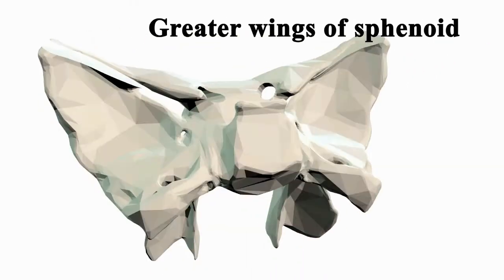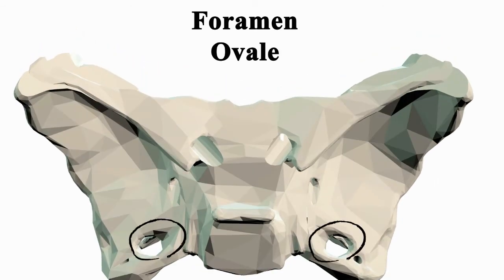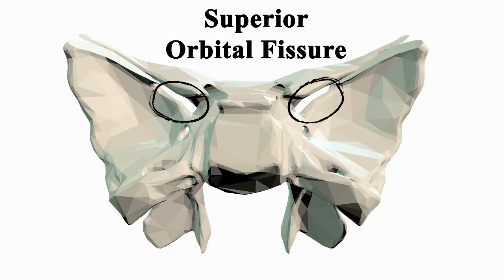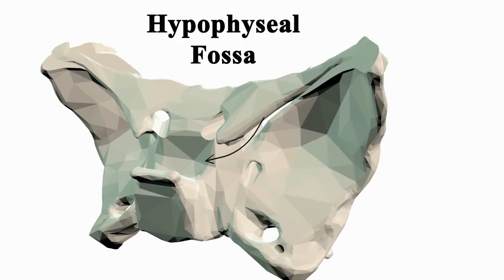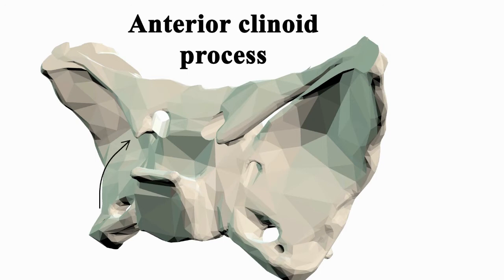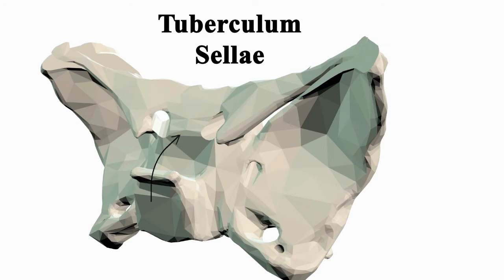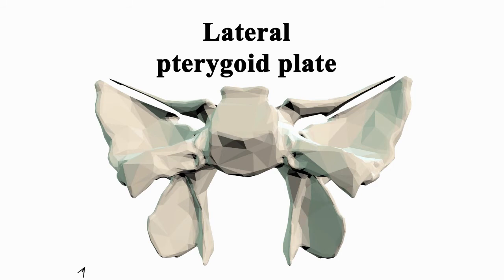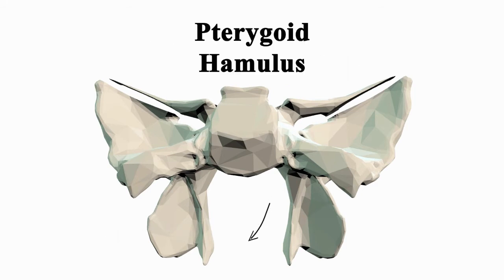The sphenoid bone contains: foramen rotundum, foramen ovale, foramen spinosum, superior orbital fissure, optic canal, hypophysial fossa, anterior clinoid process, posterior clinoid process, tuberculum sellae, dorsum sellae, medial pterygoid plate, lateral pterygoid plate, pterygoid fossa, and pterygoid hamulus.